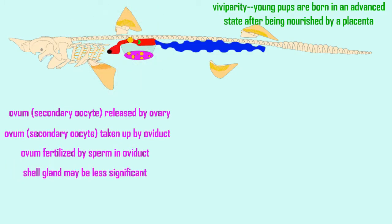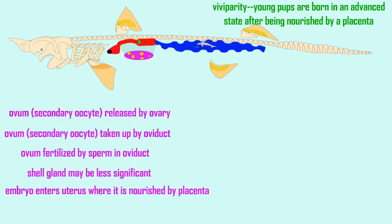Finally, some sharks are viviparous in that they produce an actual placenta where maternal tissues provide nourishment for the developing shark.